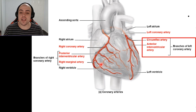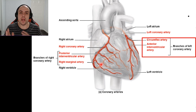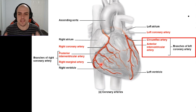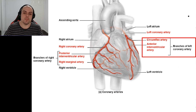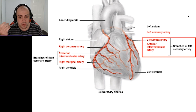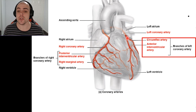Looking now at the other side of the heart, we have our left coronary artery, and that's going to branch into two other main arteries. The first one is our circumflex artery, and what this does is branch around posteriorly — wrapping around and behind the heart — and deliver blood to the left ventricle.